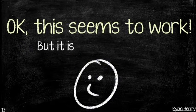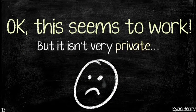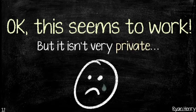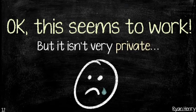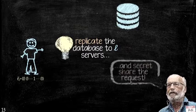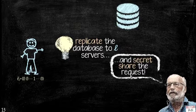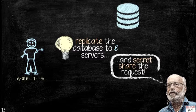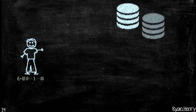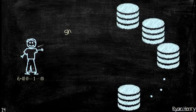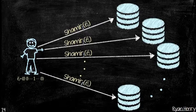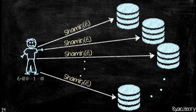This works but it's not private at all. So now we need to figure out what to do to take this basic approach and turn it into a private information retrieval protocol. The idea is to replicate the database, and then take this query vector and secret-share it using Shamir's secret sharing scheme. We replicate the database, then secret-share this vector component-wise, and send a different vector of secret shares to each server.